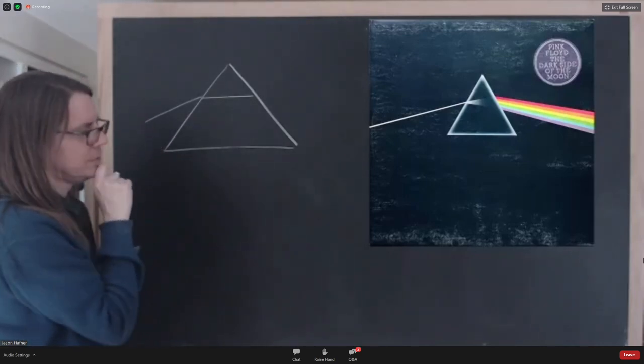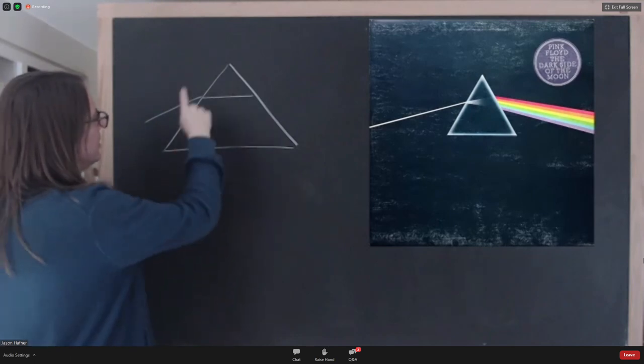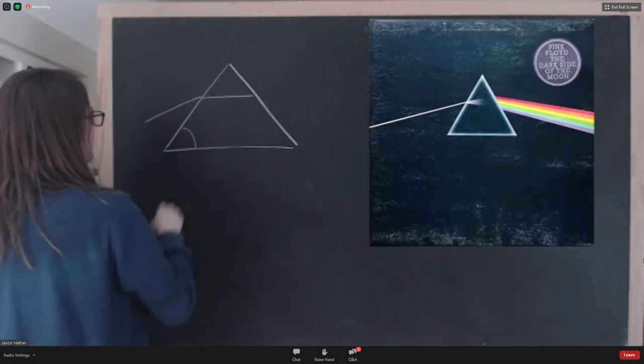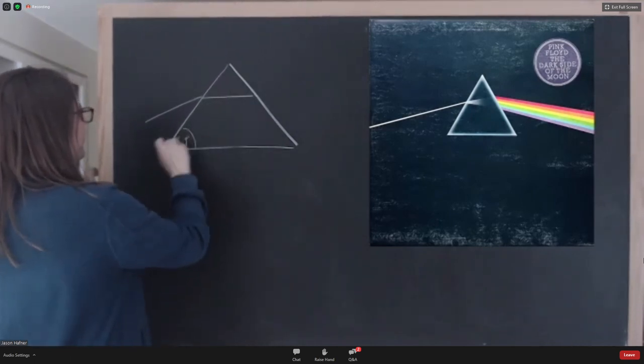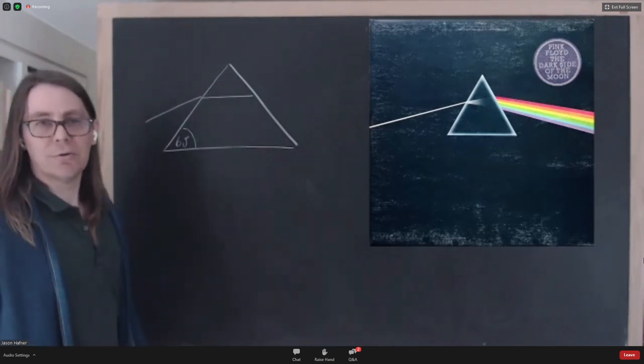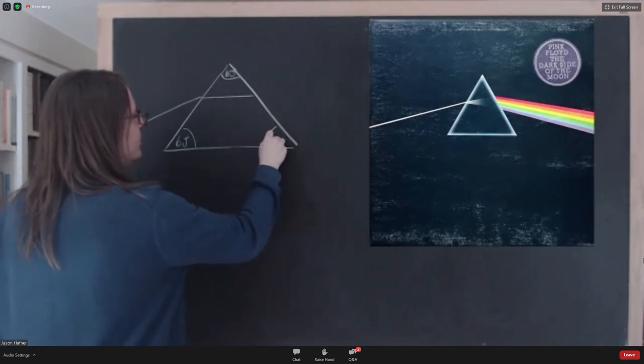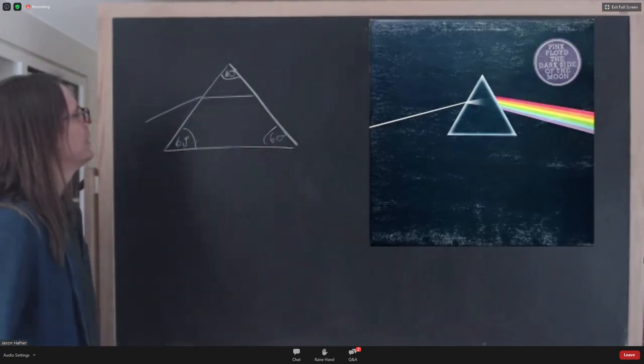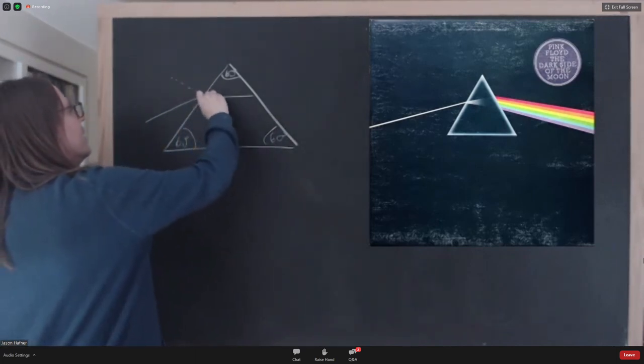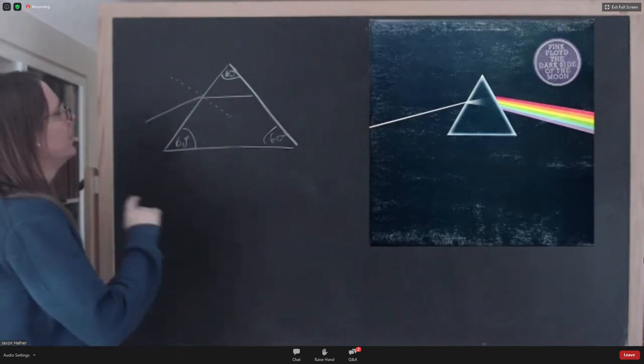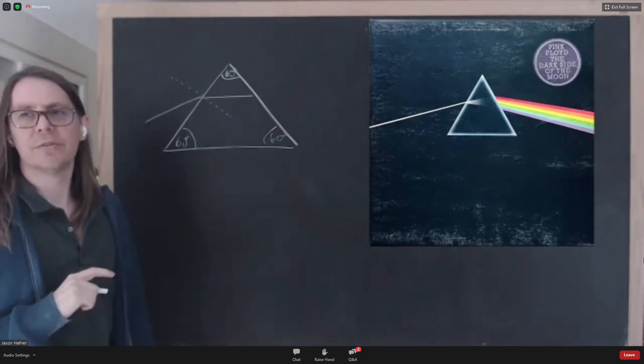We have to draw the normal to this thing, the prism. It looks like an equilateral triangle. So all these angles are 60 degrees. And this is geometrical optics. We have to do a little geometry. So if I draw a normal like that, we've got to figure out what is the angle of incidence. Or what is the angle of refraction? I'm sorry.